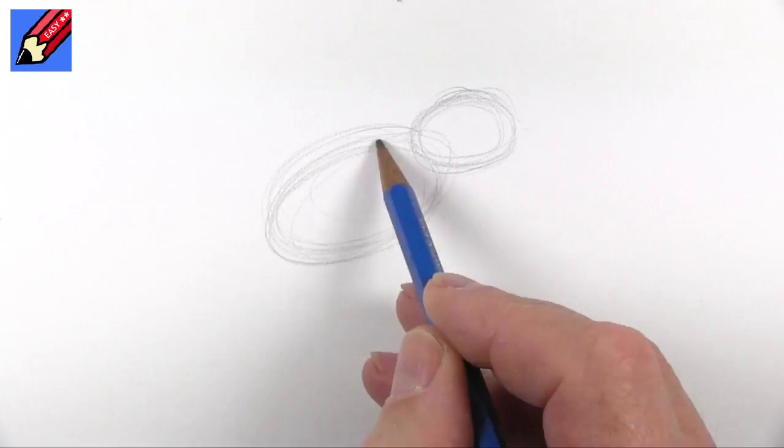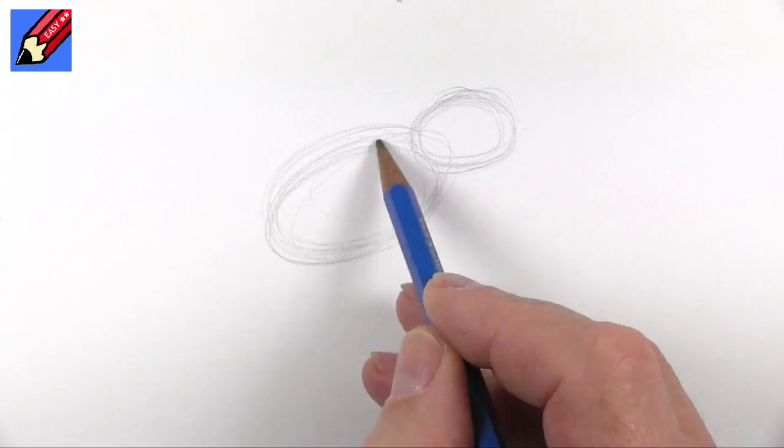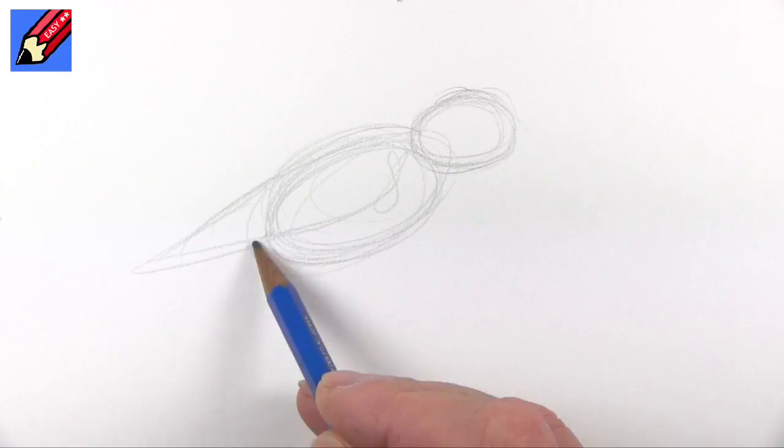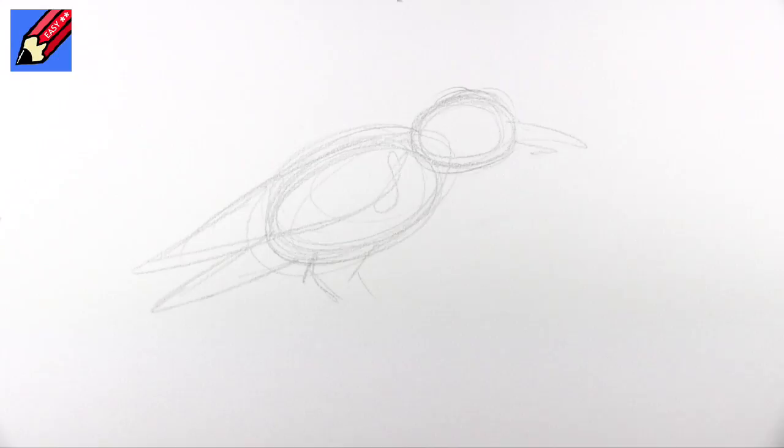So you want an oval shape for the head and an oval shape for the body. And then that's going to come down into a wing, and then you're going to want a tail and legs. And then the beak. So let's ink this in.